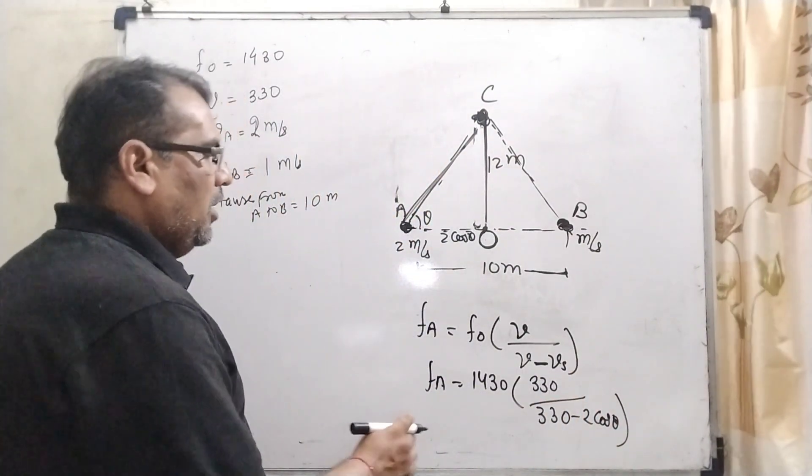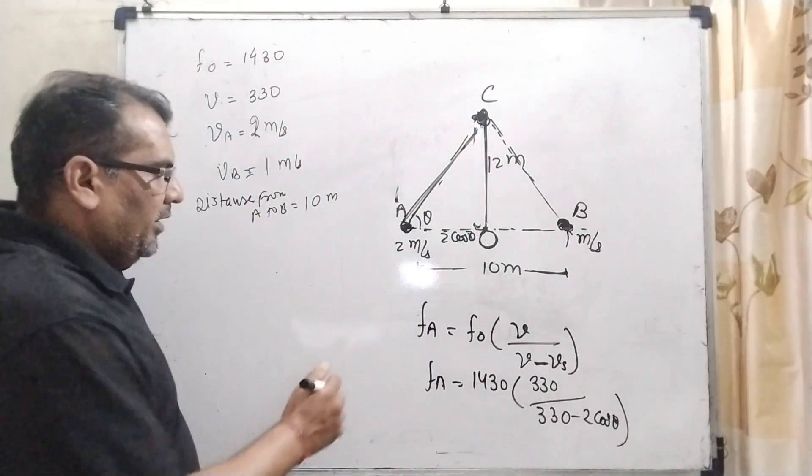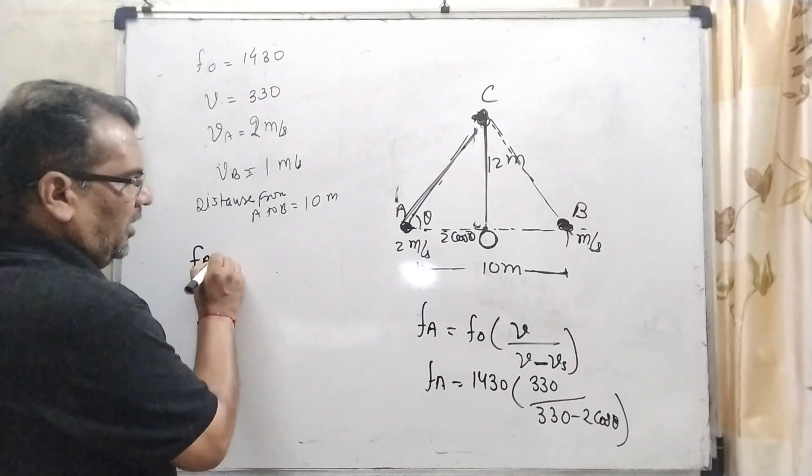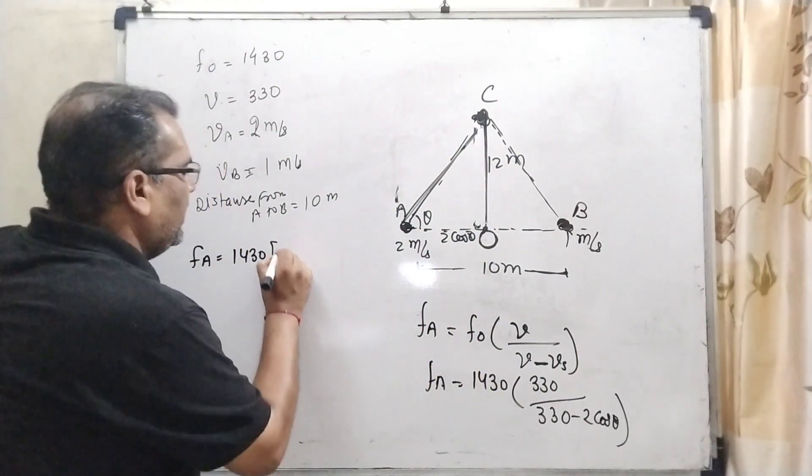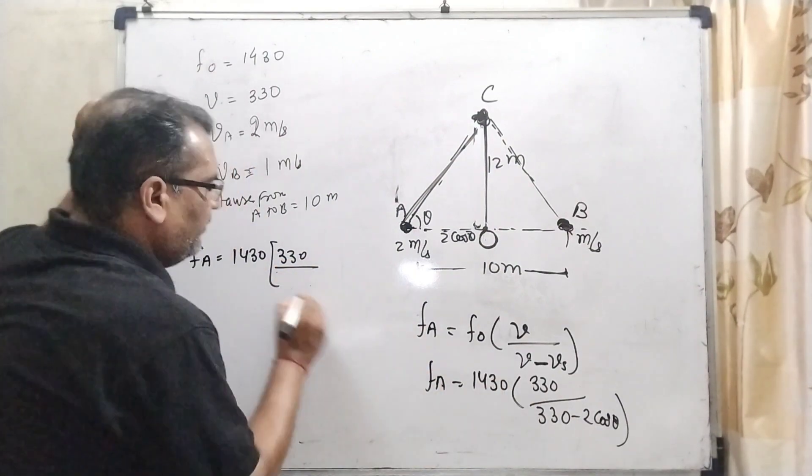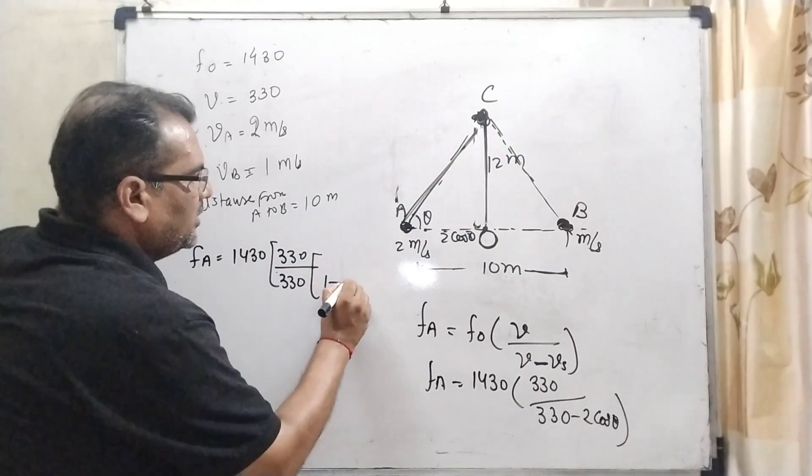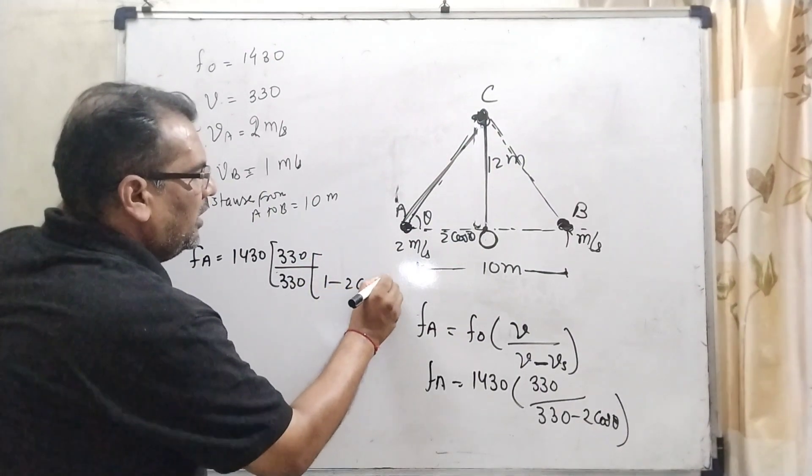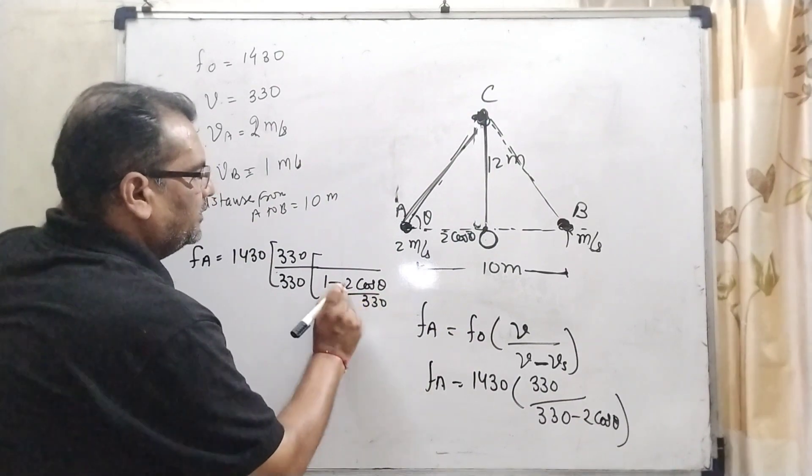So it can be written as fₐ = 1430 × 330 / (330 - 2 cos θ). Here, 330 gets common from numerator and denominator. Now it becomes 1 minus (2 cos θ / 330).